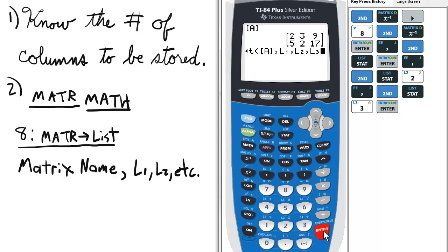I believe I can press enter. Cool, it's done. Now, what this means is 2, 5, which is the first column, will be stored as list 1.